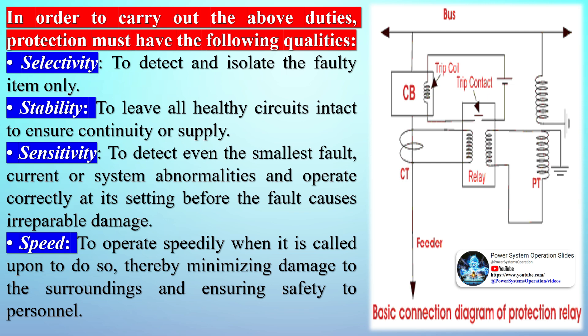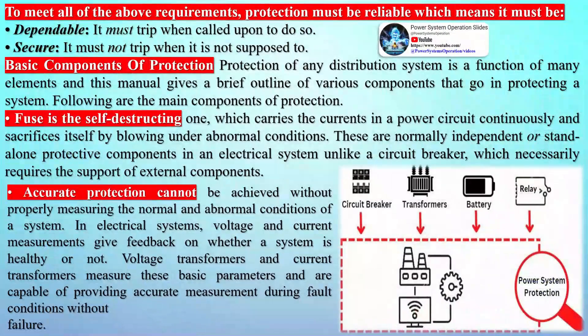The basic components of protection of any distribution system involve many elements. Following are the main components of protection. A fuse is a self-destructing device which carries the current in a power circuit continuously and sacrifices itself by blowing under abnormal conditions. These are normally independent or stand-alone protective components in an electrical system, unlike a circuit breaker which necessarily requires the support of external components.